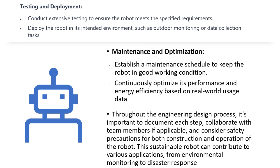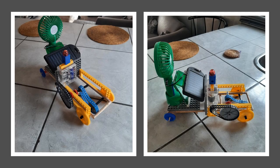The final step is testing and deployment: conduct extensive testing to ensure the robot meets specified requirements, then deploy it in its intended environment, such as outdoor monitoring or data collection. Establish a maintenance schedule and continuously optimize performance and energy efficiency based on real-world usage data. Throughout the engineering design process, document each step, collaborate with team members, and consider safety precautions. This sustainable robot can contribute to applications from environmental monitoring to disaster response.